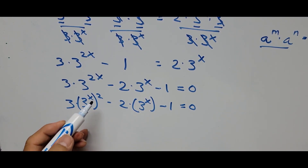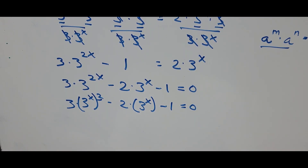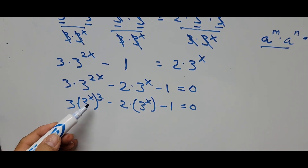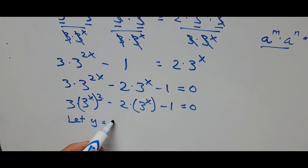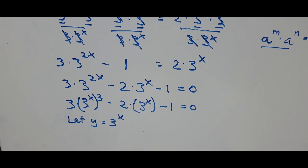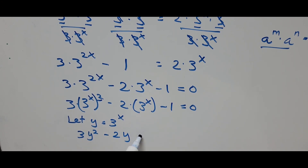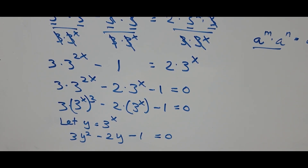Since we have exponent 2, we introduce a new variable to represent 3 to the power x. Let y equal 3 to the power x. Substituting y for 3 to the power x on those two terms, the equation now becomes: 3y squared minus 2y minus 1 equals 0.